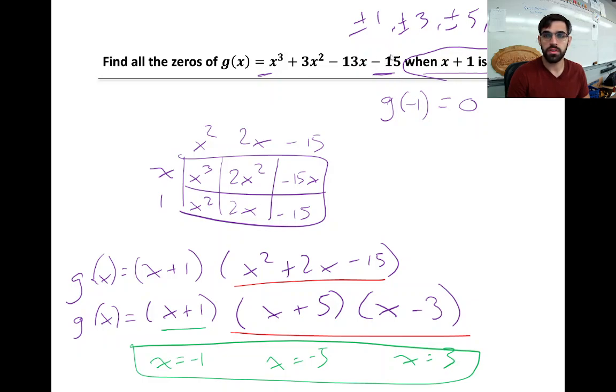Because our constant term is 15, we're thinking 1 times 15, or 3 times 5. So positive or negative 1, 3, 5, and 15 are the only possible b values. Positive 1 is this case, so that's consistent with what we just learned.